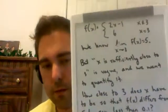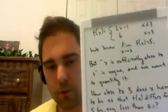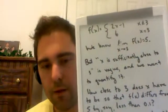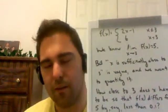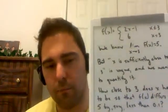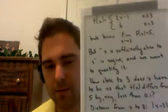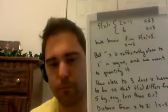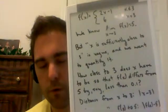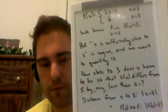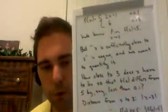But this phrase — x is sufficiently close to 3 — is very vague. It doesn't say, in particular, how close to 3 does x need to be in order so that f of x differs from 5 by, say, less than 0.1.